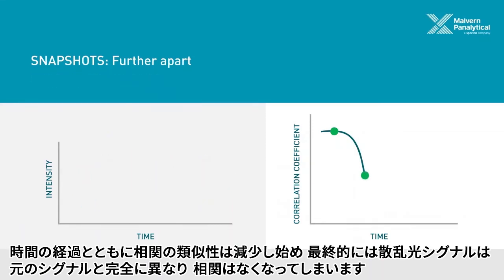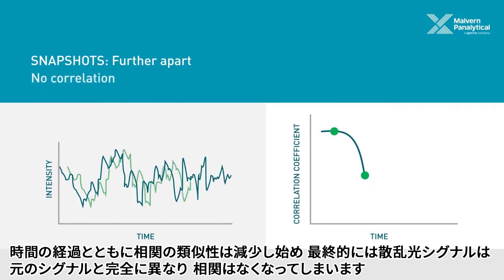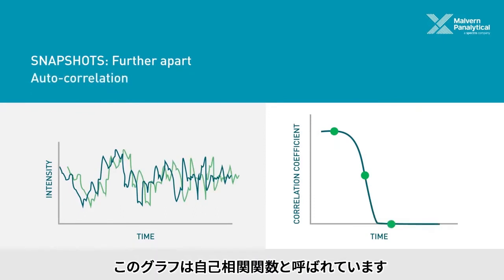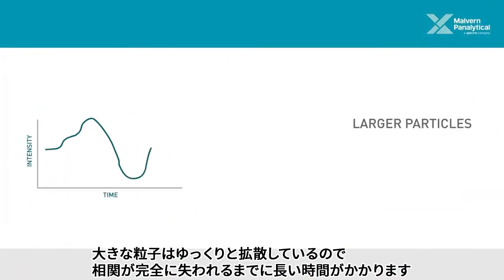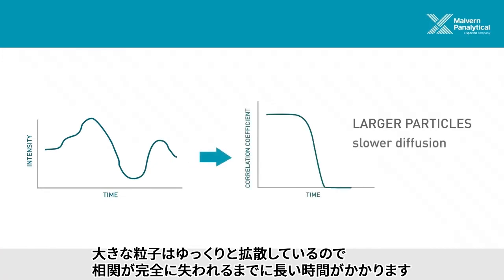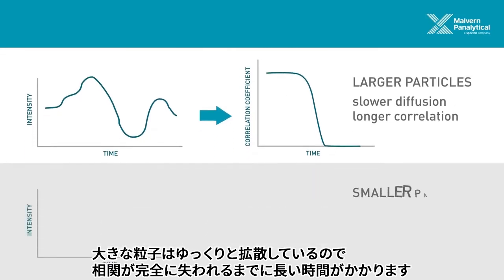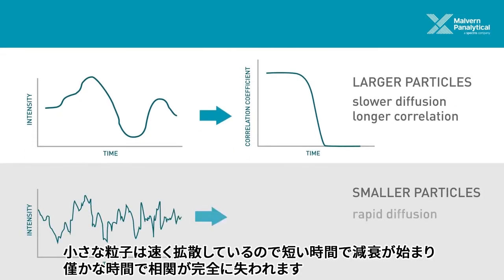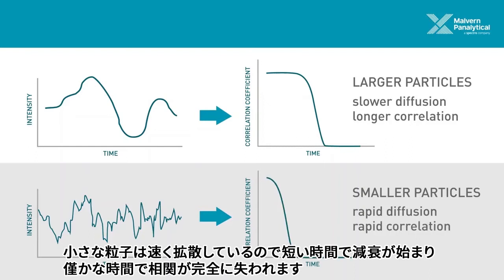Eventually the intensity signal changes completely, and there is no longer any correlation with the original signal. This process is called auto-correlation. The larger the particles being measured, the more slowly they diffuse, and the longer it takes for a complete loss of the correlation signal. For small particles, which undergo rapid diffusion, the correlation of the signal will decay rapidly.